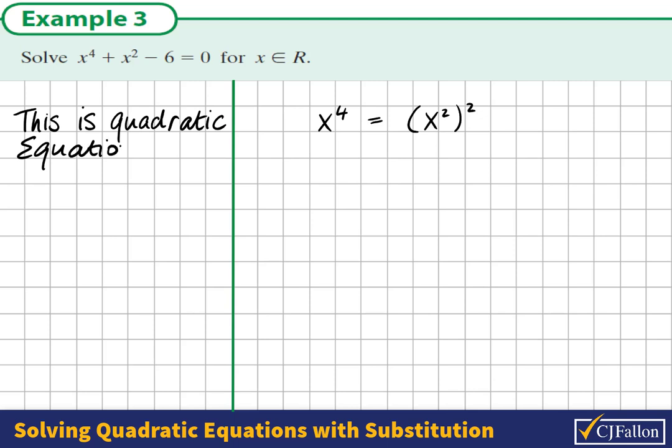So we could re-express our equation in terms of x^2. The first term would be (x^2)^2 + x^2 - 6 = 0.